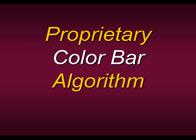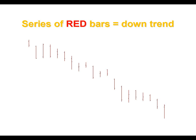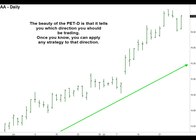The PET-D is extremely simple to use — we color the bars. If you see a series of green bars, it's telling you you're in a short-term uptrend. Conversely, if you see a series of red bars, you're in a short-term downtrend. As we look at this example in Alcoa, all the bars are green all the way from the end of May into June, telling us we are in a short-term uptrend.